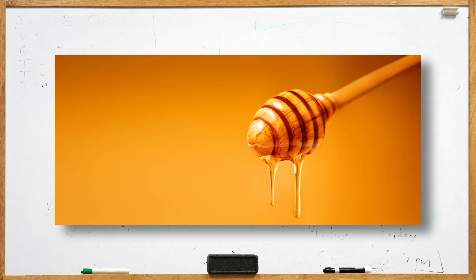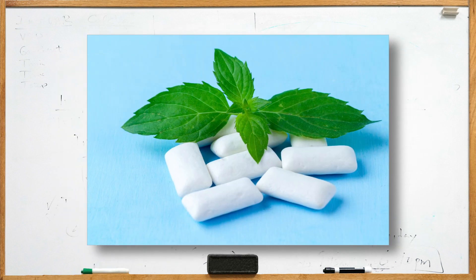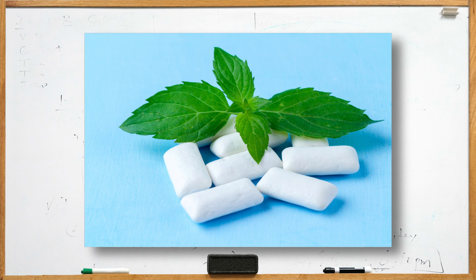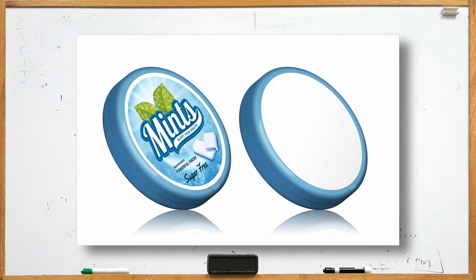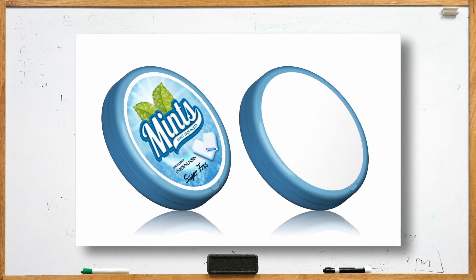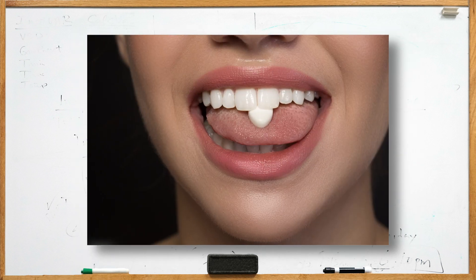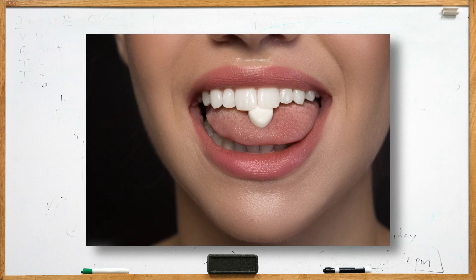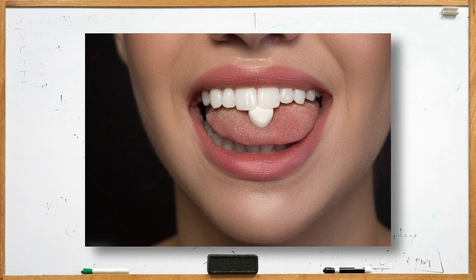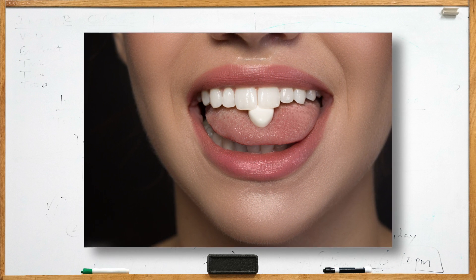Breath mints. Altoids use gelatin in the production of its mints. Ingredients may not be the first thing you look at when you buy breath mints, but companies can use animal products in many things. Altoids do make a vegan friendly breath mint called sugar-free smalls. It probably isn't the only brand that uses gelatin, so be on the lookout.